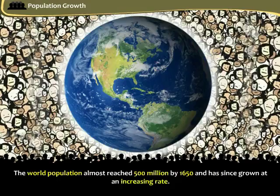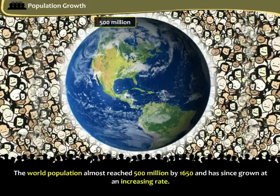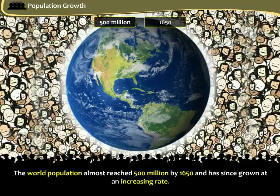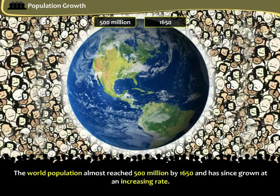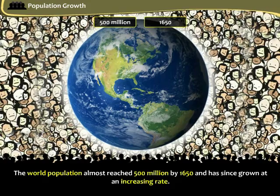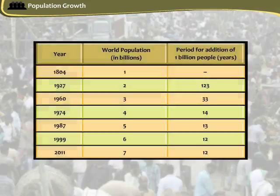The world population almost reached 500 million by 1650 and has since grown at an increasing rate. The following table provides information on the rate at which the world population has been increasing since 1804.